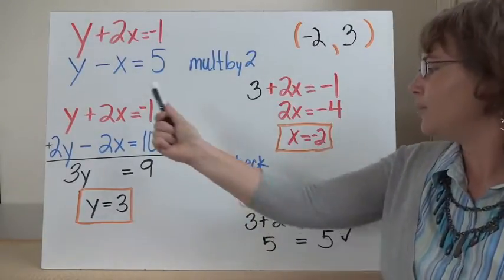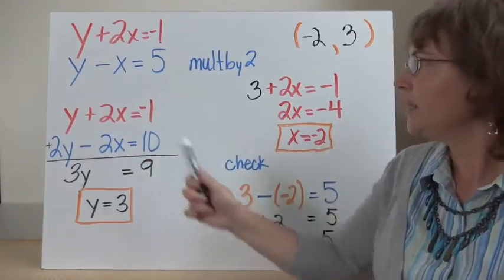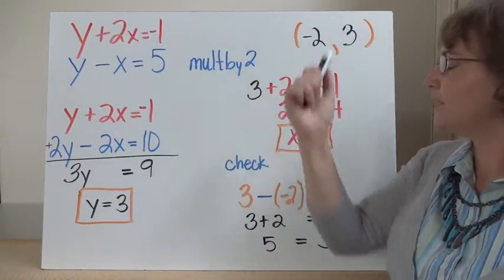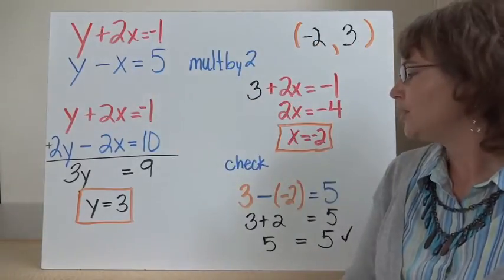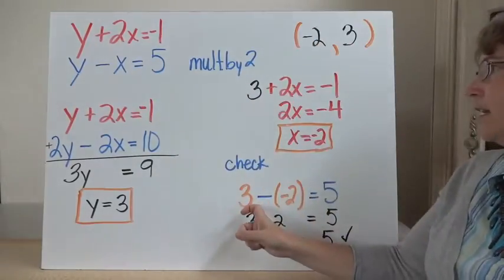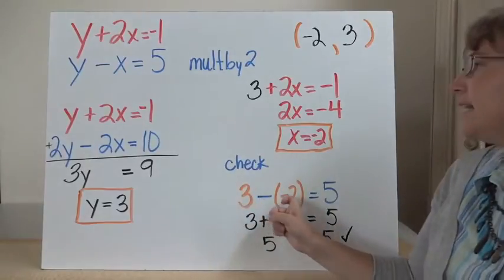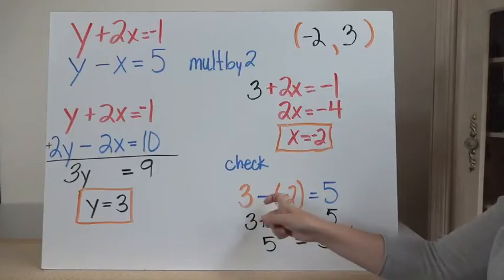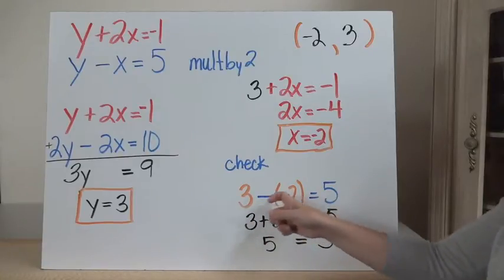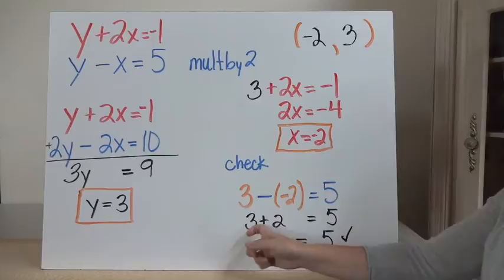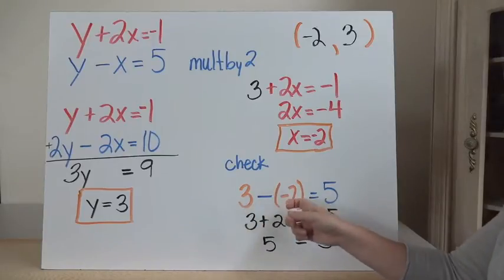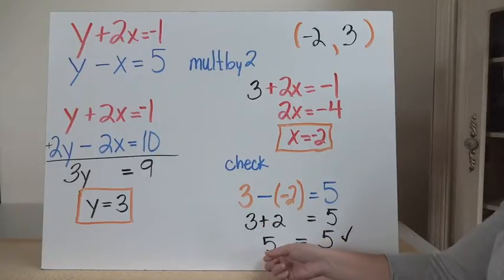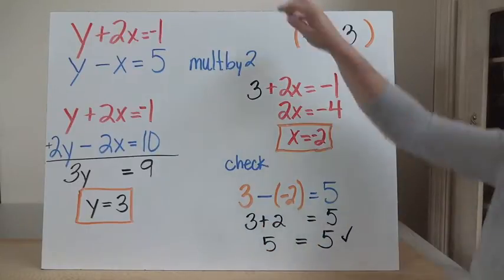That is the coordinate at which these two lines cross. I can double-check it by using my second equation: y minus x equals 5. Taking y equals 3 and x equals negative 2, I get 3 minus negative 2 equals 5. That's the same as 3 plus 2, which equals 5. So I have 5 equals 5, and my equation is true.